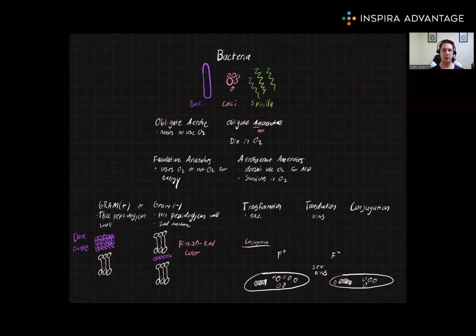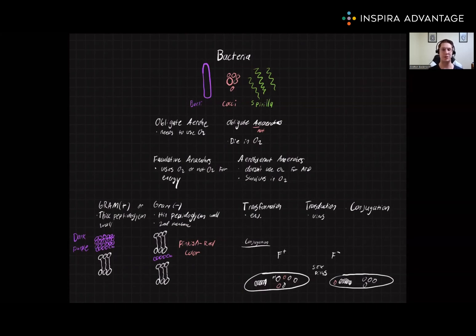Now you know all of the important bacterial classification as well as how genetic recombination occurs to do great on the MCAT. I recommend taking a picture of this review sheet so that way you can remember and look at this before your exam. Thank you so much for watching our video on bacteria and I will see you next time.